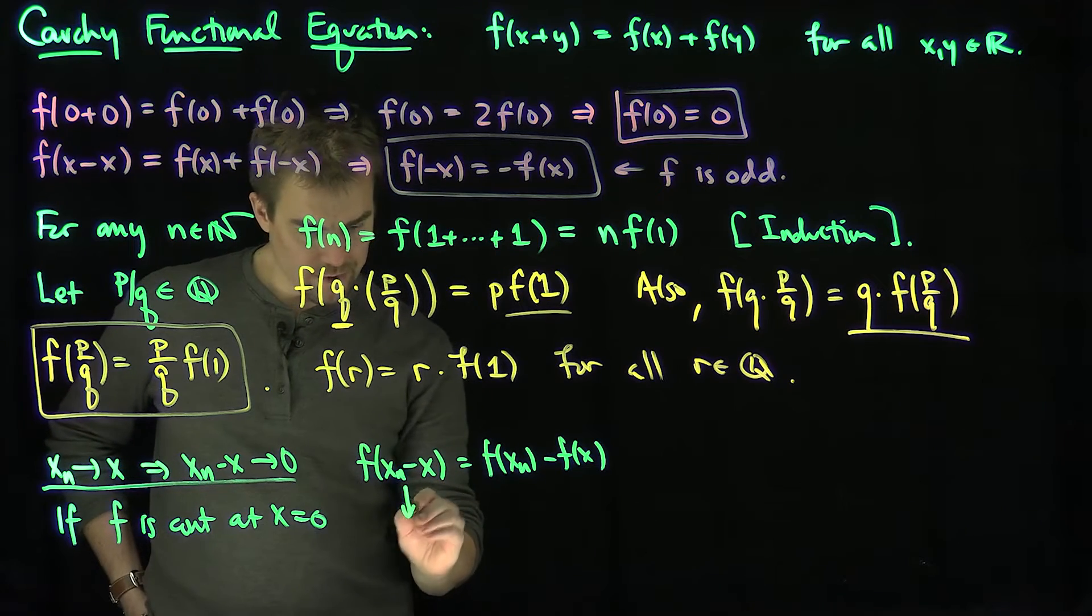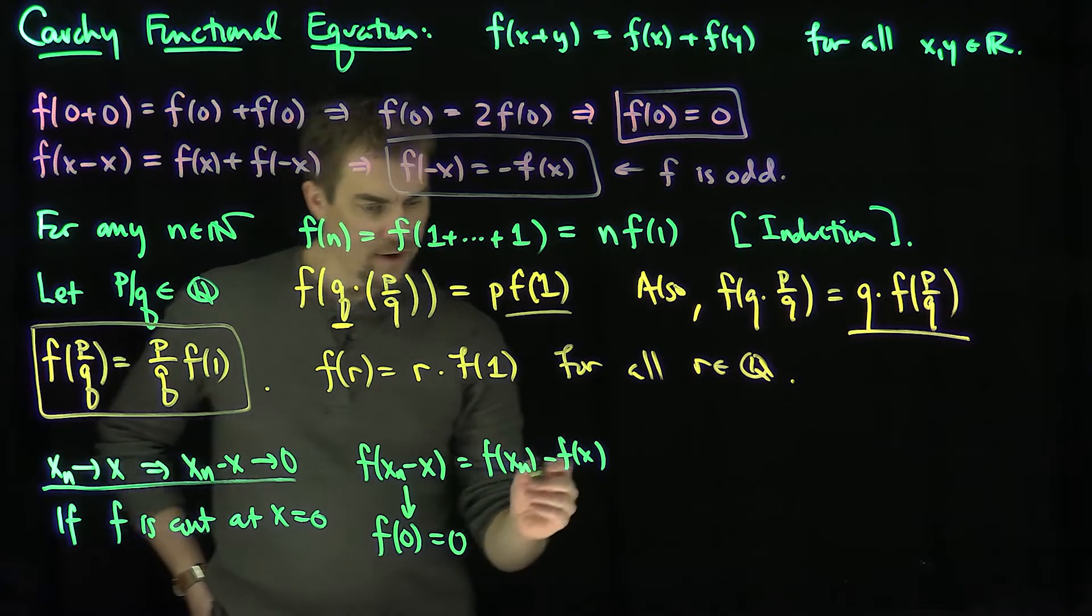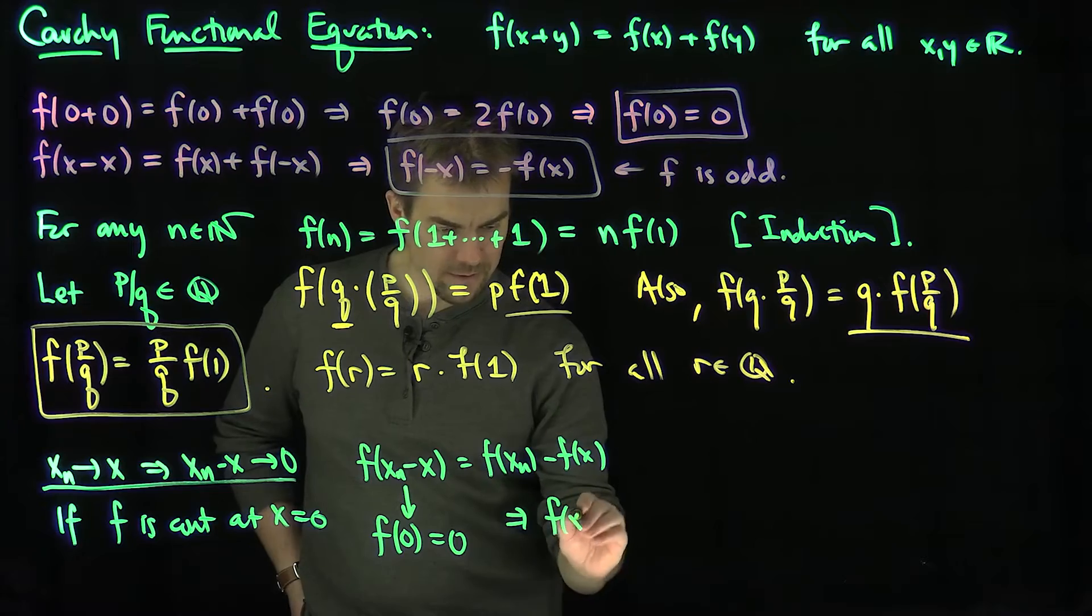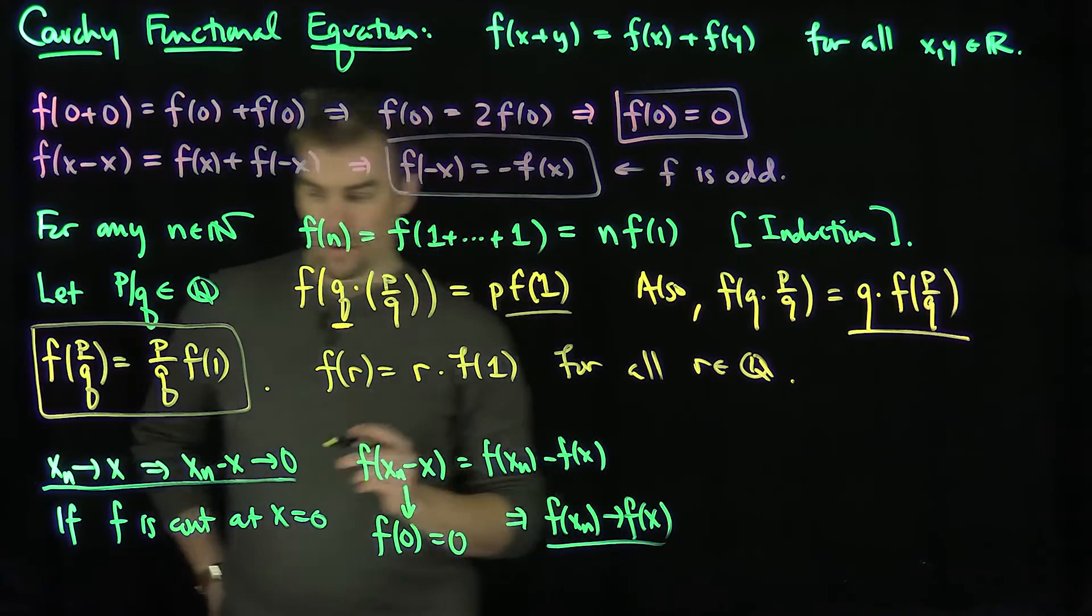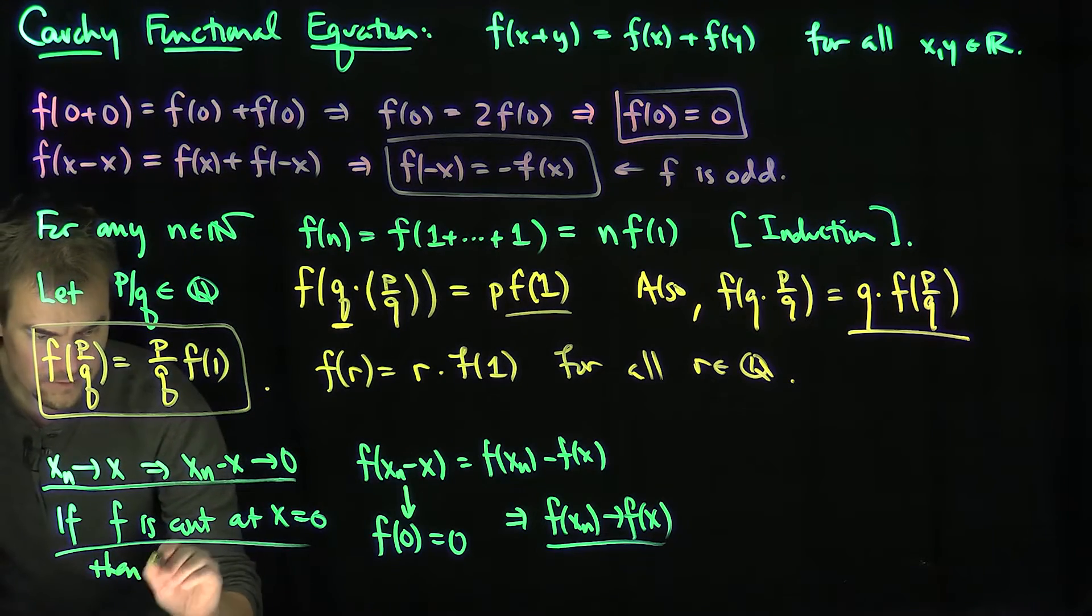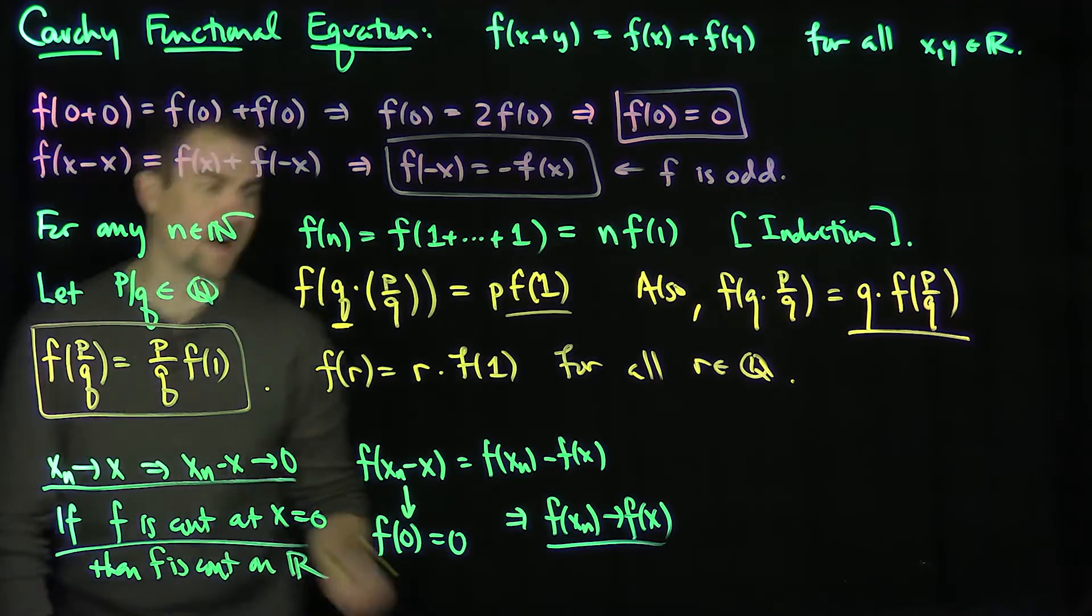And therefore, that implies that f(x_n) converges to f(x) for any value x. So in other words, if f is continuous at zero, then f is continuous at x. f is continuous on the whole real line.